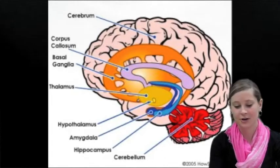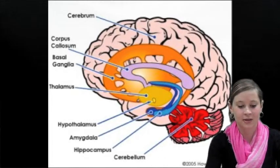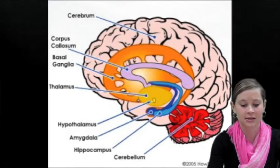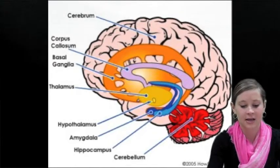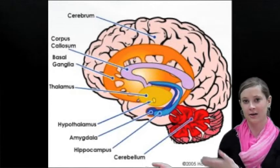To learn about the interior brain, such as the amygdala, cerebrum, corpus callosum, thalamus, hypothalamus, and hippocampus, pick on the images right here.